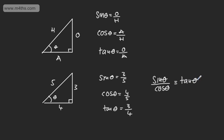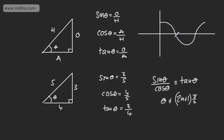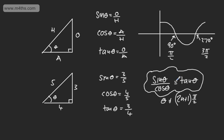I've written the identity sign — three lines — which says it holds true for all values. Theta cannot be equal to odd multiples of 90 degrees or pi by 2, because we can't have division by zero — it's undefined. If we look at the cosine curve, at 90 degrees or pi by 2 radians, and 270 degrees or 3 pi by 2 radians, those are undefined. But generally, sine theta over cos theta is tan theta. So sine x over cos x is tan x, and sine of 20p over cos of 20p is tan of 20p.